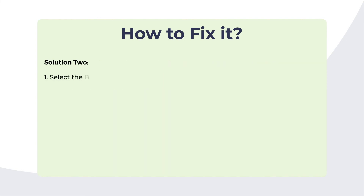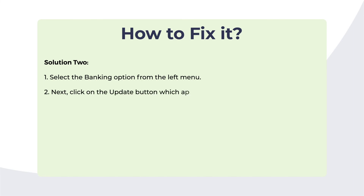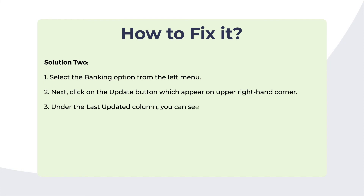Solution 2: Select the Banking option from the left menu, then click the Update button in the upper right-hand corner. Under the Last Updated column, you can see the date and time of the last update listed.